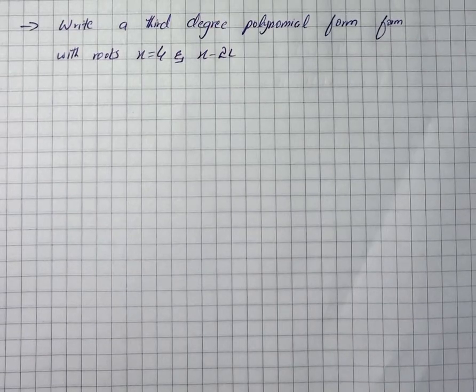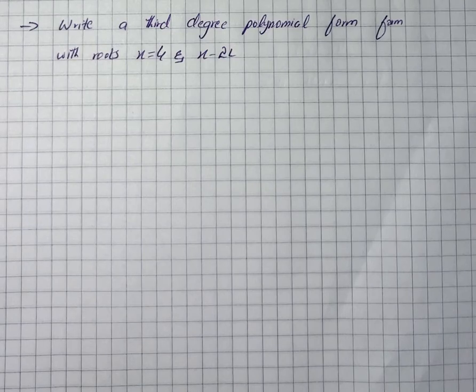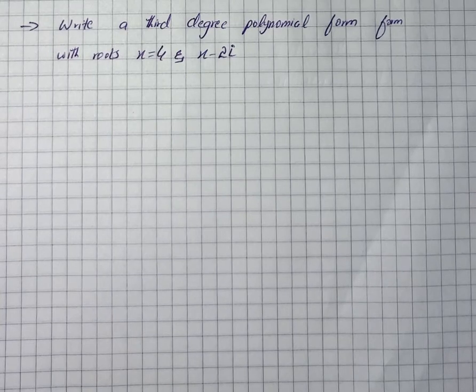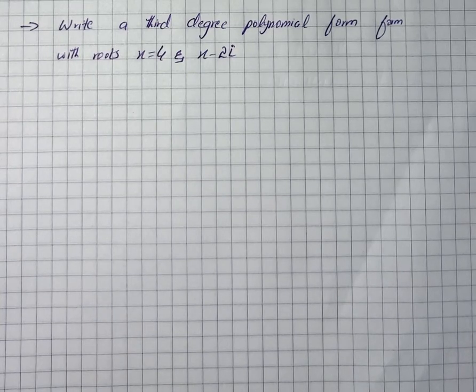The question says: write a third degree polynomial in standard form with roots x = 4 and x = 2i. If a is a zero of a polynomial function, then (x - a) is one of its factors.